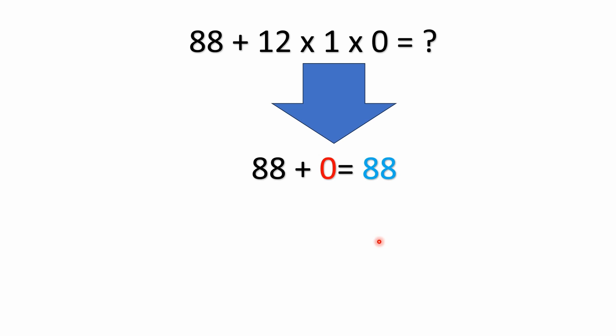So you have 12 times 1 times 0. You have two multiplications there. 12 times 1 is 12, but 12 times 0 is 0. So 12 times 1 times 0 equals 0, and you end up with 88 plus 0 equals 88. So the answer to the problem is 88. Now I will see a lot of problems from people where they will try to go left to right and do 88 plus 12, which is incorrect.